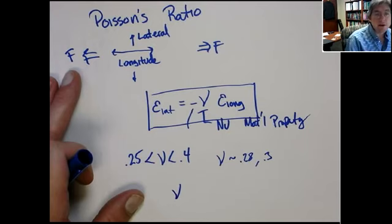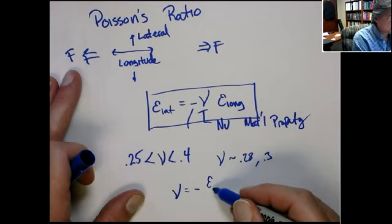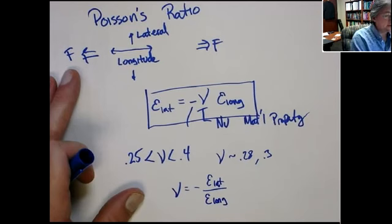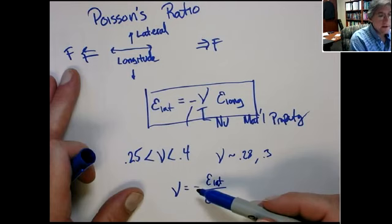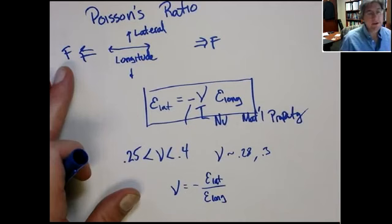Sometimes you'll also see it defined by dividing through by the longitudinal strain. From thermodynamics, you can show that Poisson's ratio is less than one-half. The lateral strain divided by the longitudinal strain, with a sign change, gives you Poisson's ratio.